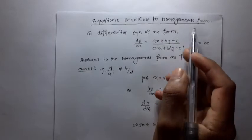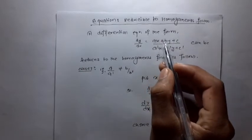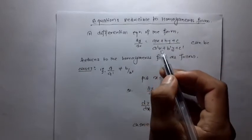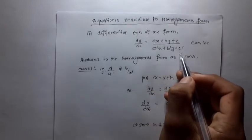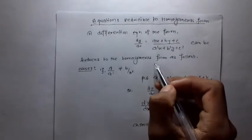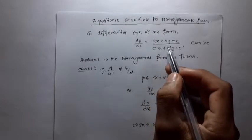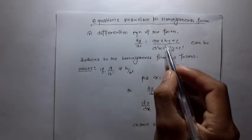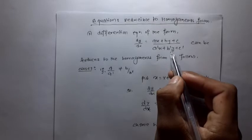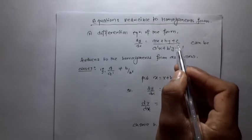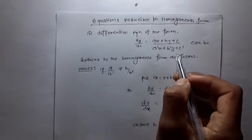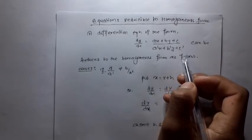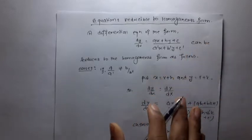An equation reducible to homogeneous form: a differential equation of the form dy/dx = (ax + by + c)/(a'x + b'y + c') can be reduced to homogeneous form. In homogeneous form, the constants c and c' vanish. We reduce it to homogeneous form using a substitution y = vx to find the solution. So there are two cases.